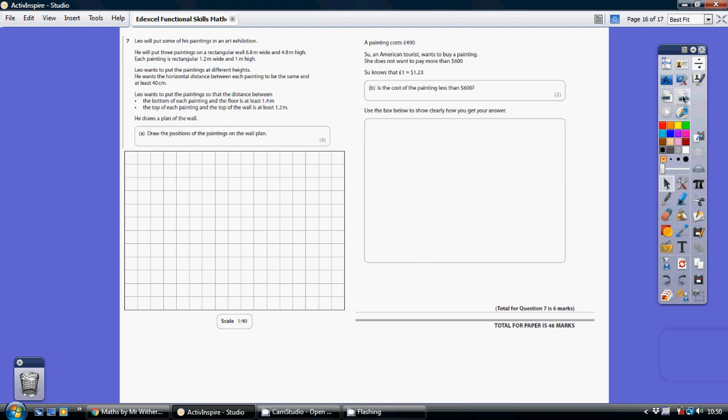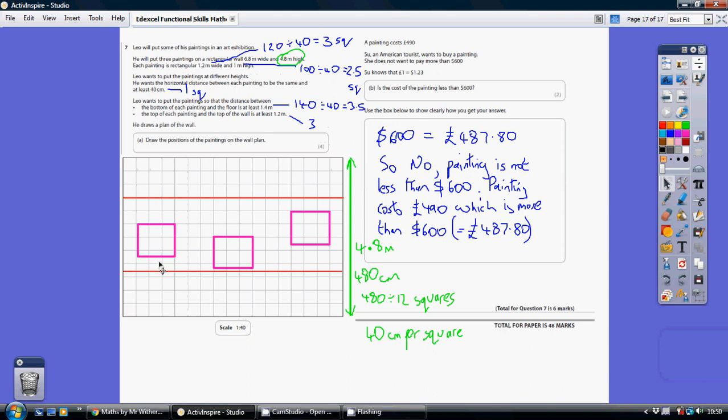Question 7. So we've got a wall here, and the wall is 6.8 metres wide and 4.8 metres high.